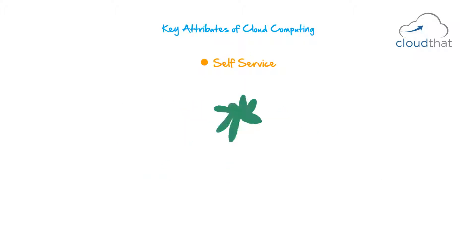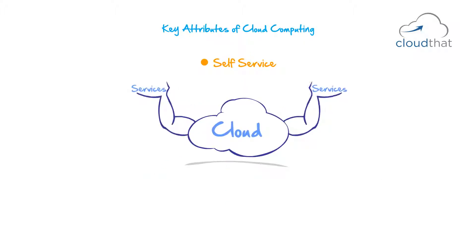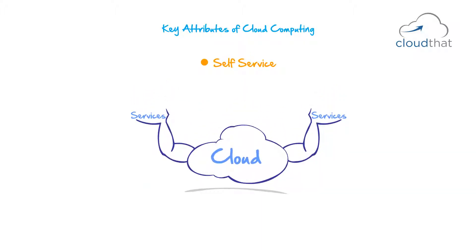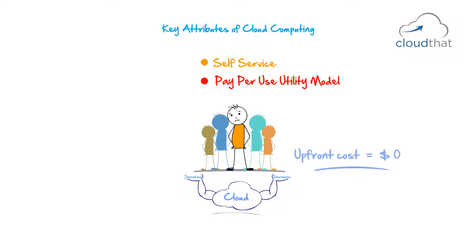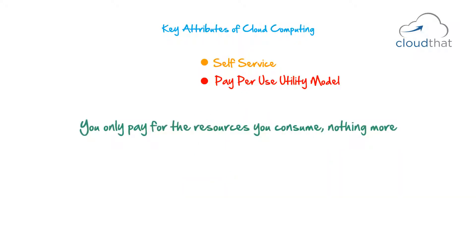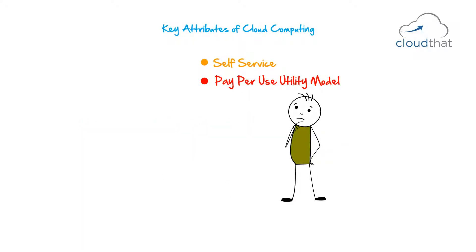The next attribute a cloud service should have is a pay-per-use utility model. Cloud providers must allow users to request and use the desired amount of services without any sort of upfront cost. You only pay for the resources you consume, nothing more.